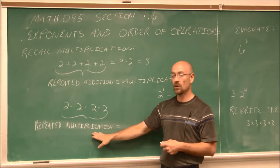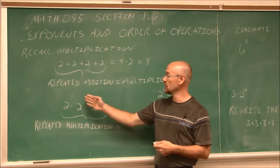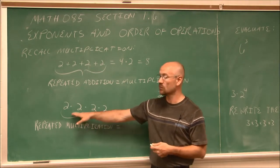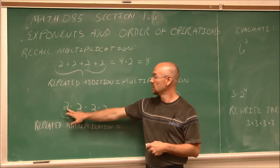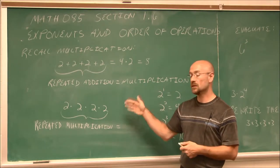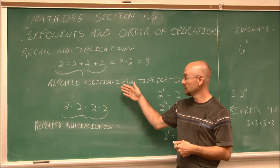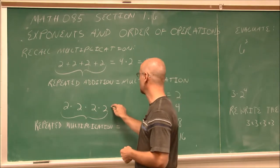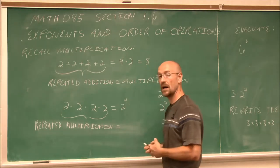But what if we have repeated multiplication? This is where we can use exponents. Instead of rewriting the same factor over and over — and these are factors, that's what we call the values we are going to multiply — 2 times 2 times 2 times 2. Essentially, I have 2 being multiplied 4 times. So I can say 2 to the fourth power.